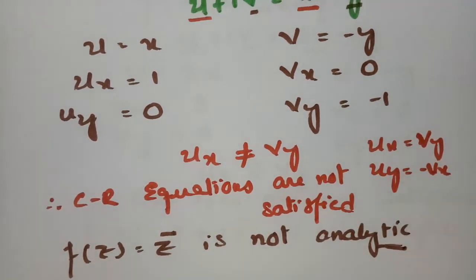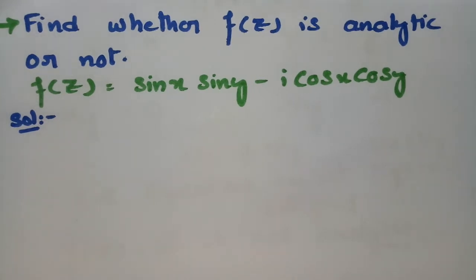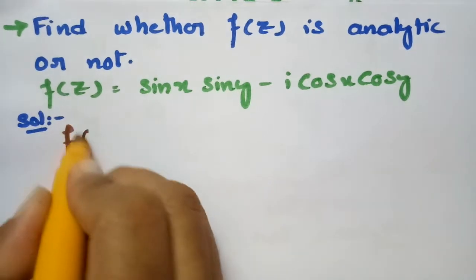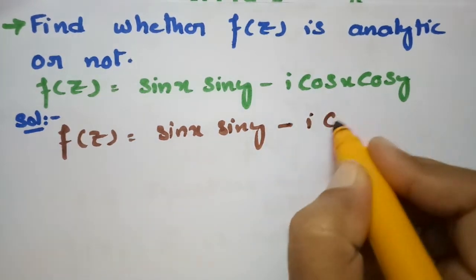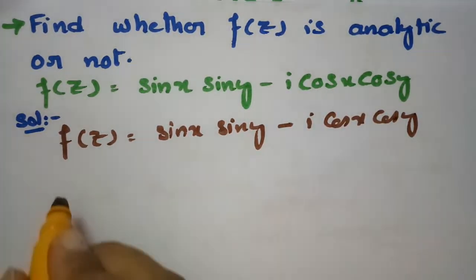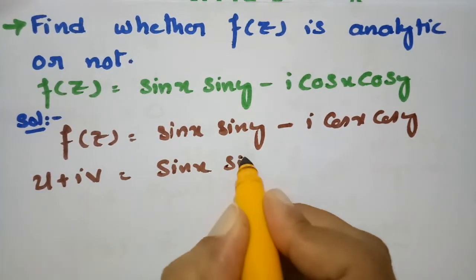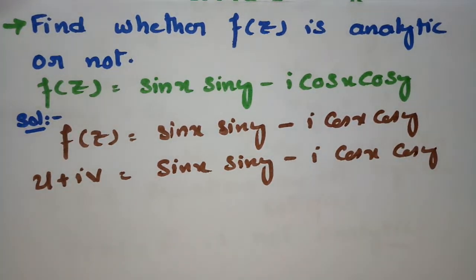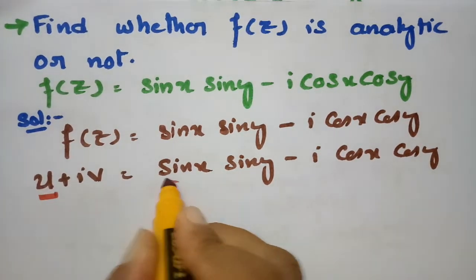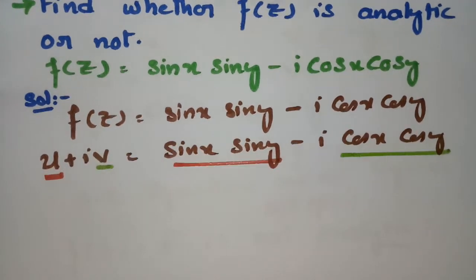The next question asks us to find whether f(z) is analytic or not, given f(z) = sin x sin y − i cos x cos y. Comparing with u + iv, the real part u = sin x sin y and the imaginary part v = −cos x cos y.